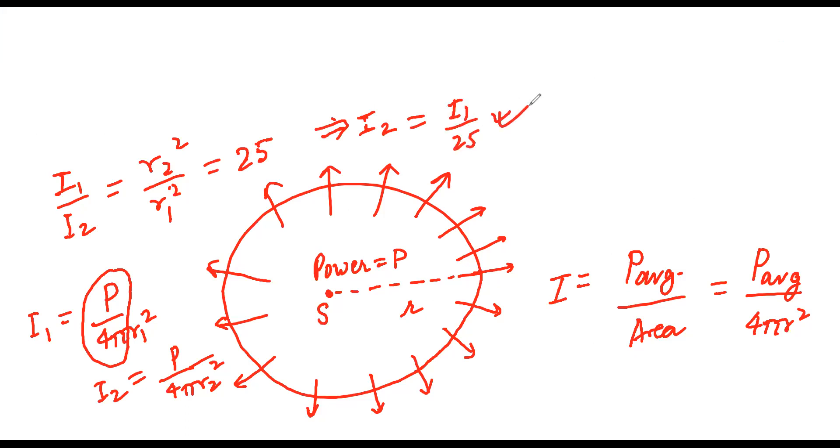I₁ by 25. Sorry, I₁ by 25. So I₁ divided by 25, the answer will come. It was simple. It's 0.04 times. Yes, 0.04 times.